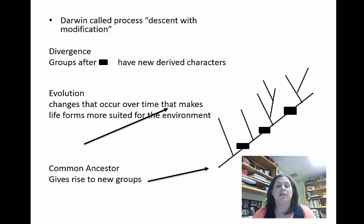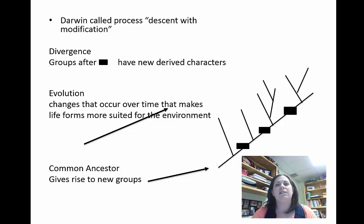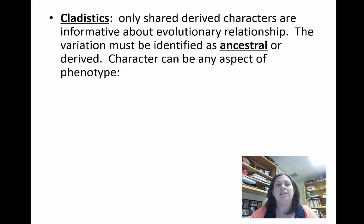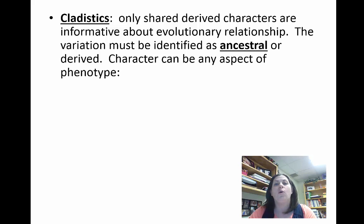We're not saying that one organism necessarily changed from, like, a rabbit to a tiger. We're just saying that the rabbit has fewer characteristics than the tiger does — the tiger has something new that makes it different for its environment. That's how we're going to be looking at these cladograms. Cladistics only looks at shared derived characters that are informative for evolutionary relationships. You have to identify if a characteristic is ancestral — meaning everyone in the group has it — or derived, meaning it's new and only some organisms have it.